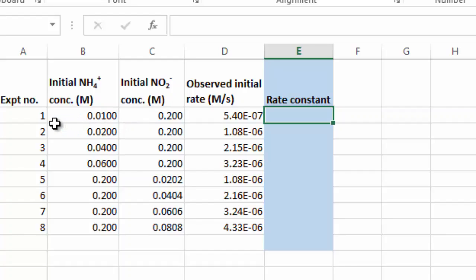So here I've dropped all the data from the table into an Excel file. Here's my eight experiments, the ammonium concentrations, the nitrite concentrations, and the observed initial rate. And I can put in an equation for the rate constant. We're saying that it equals the rate divided by the concentration of the two reactants, like that. And that gives us a value for the rate constant of 0.000270, so 2.7 times 10 to the minus 4. And if I bring this down to all the other experiments, you can see that we get very similar values all the way down.